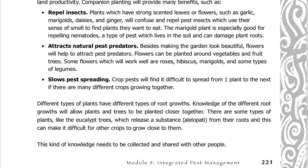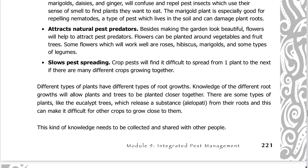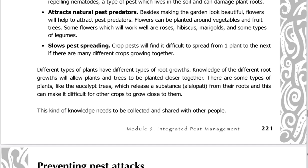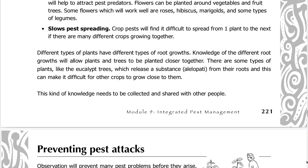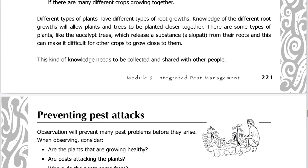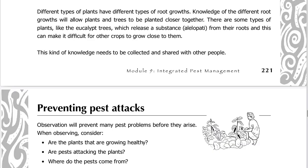Companion planting can also slow pest spreading — crop pests will find it difficult to spread from one plant to the next if many different crops are growing together. Different types of plants have different root growths; knowledge of these differences will allow plants and trees to be planted closer together. Note that some types of plants, like eucalypt trees, release a substance called allelopati from their roots, which can make it difficult for other crops to grow close to them. This kind of knowledge needs to be collected and shared with other people.